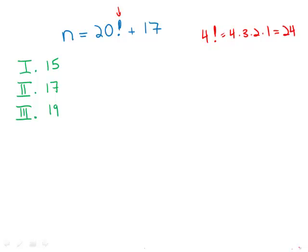20 factorial is going to be a rather large number, so we don't need to compute the value. It would be 20 times 19 times 18, and so on, down to 1.